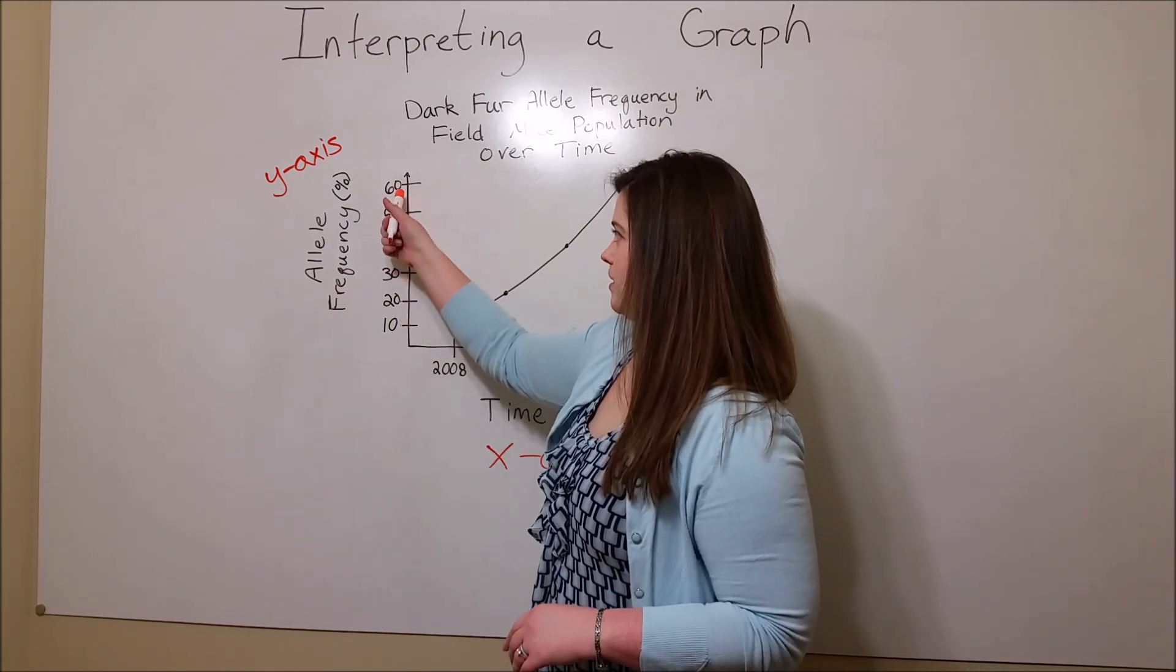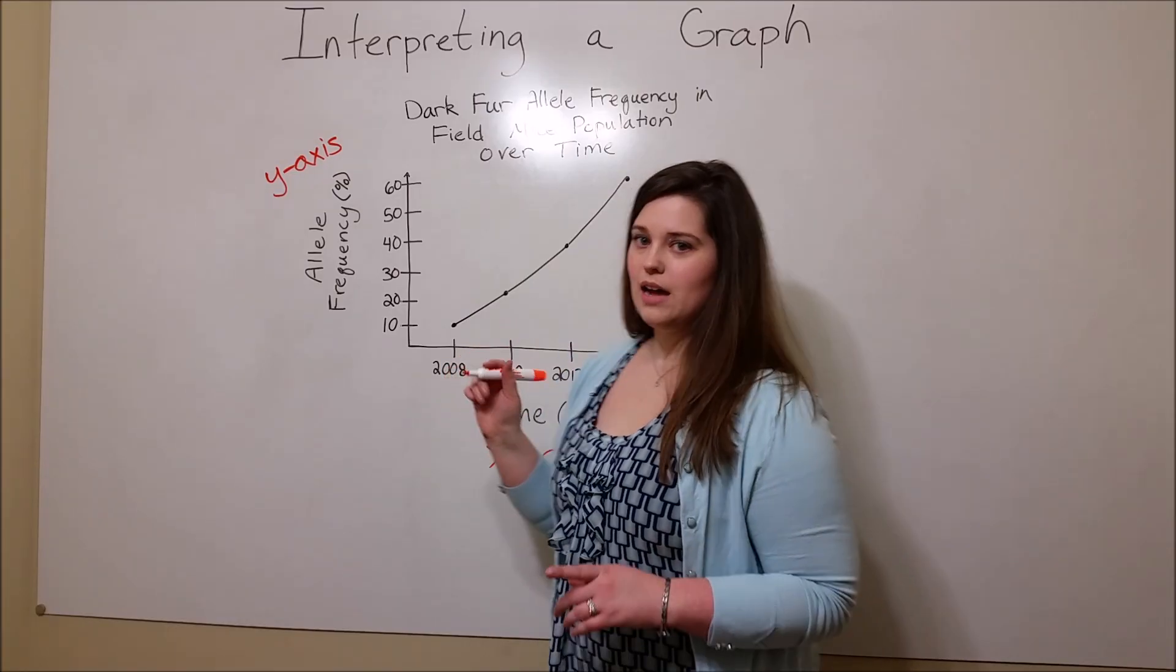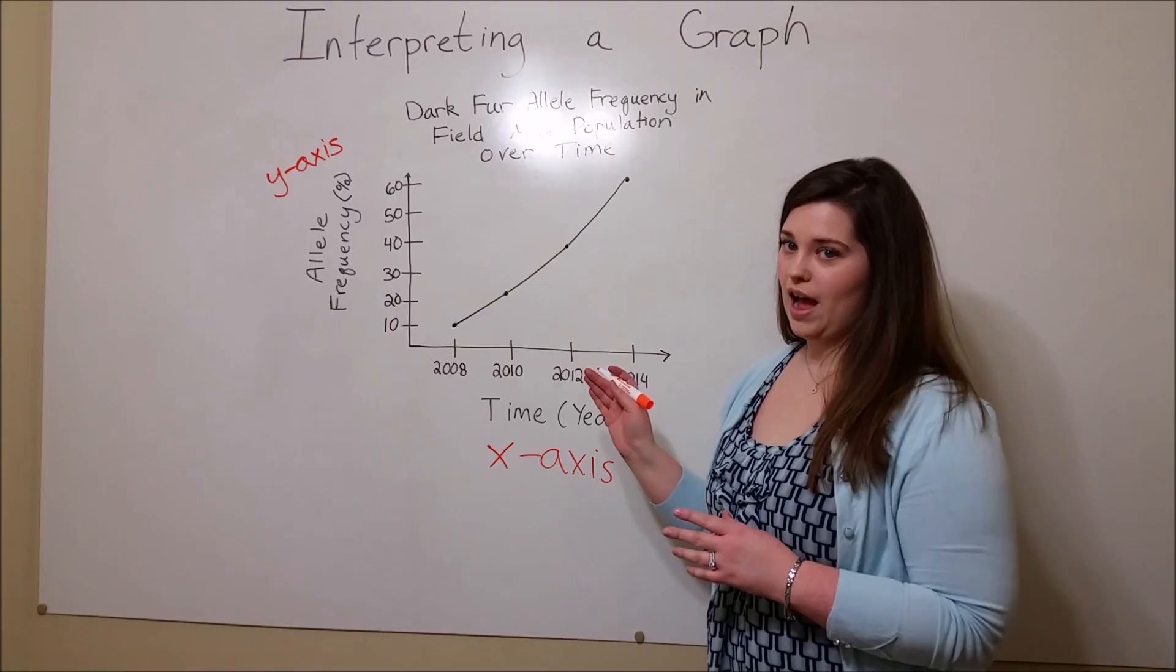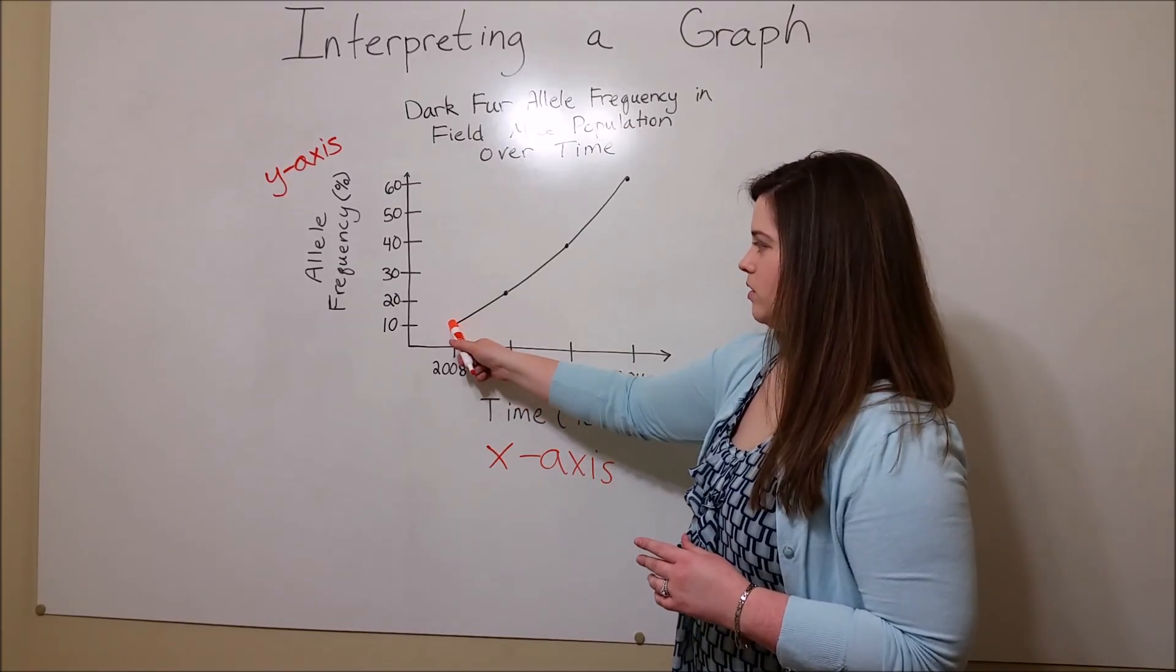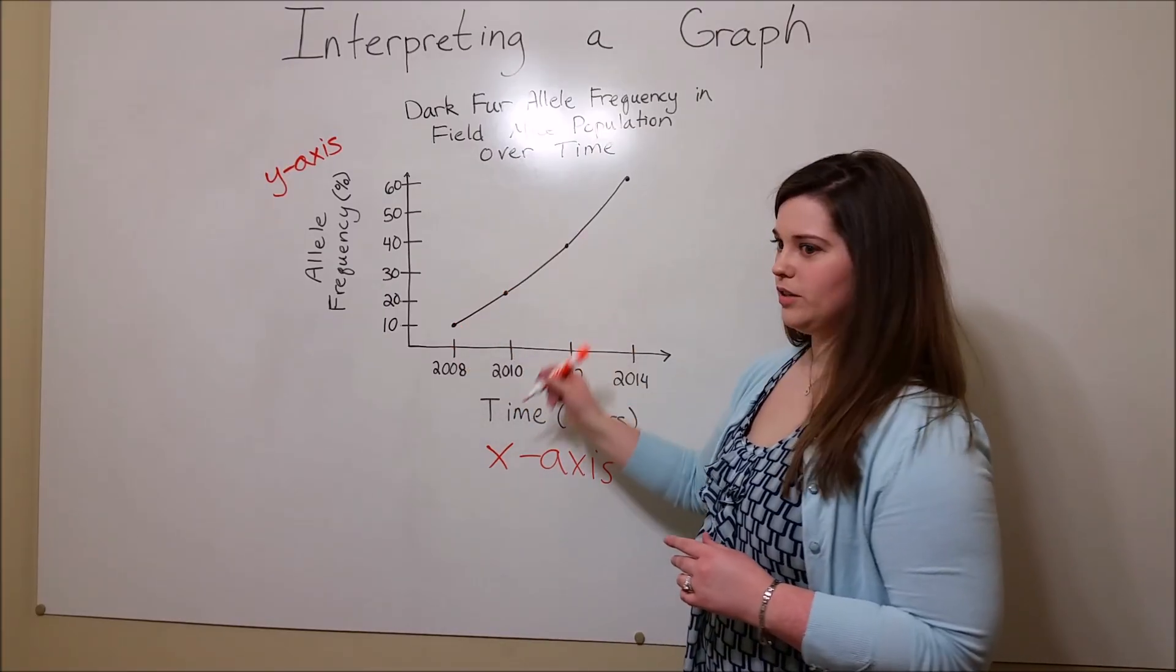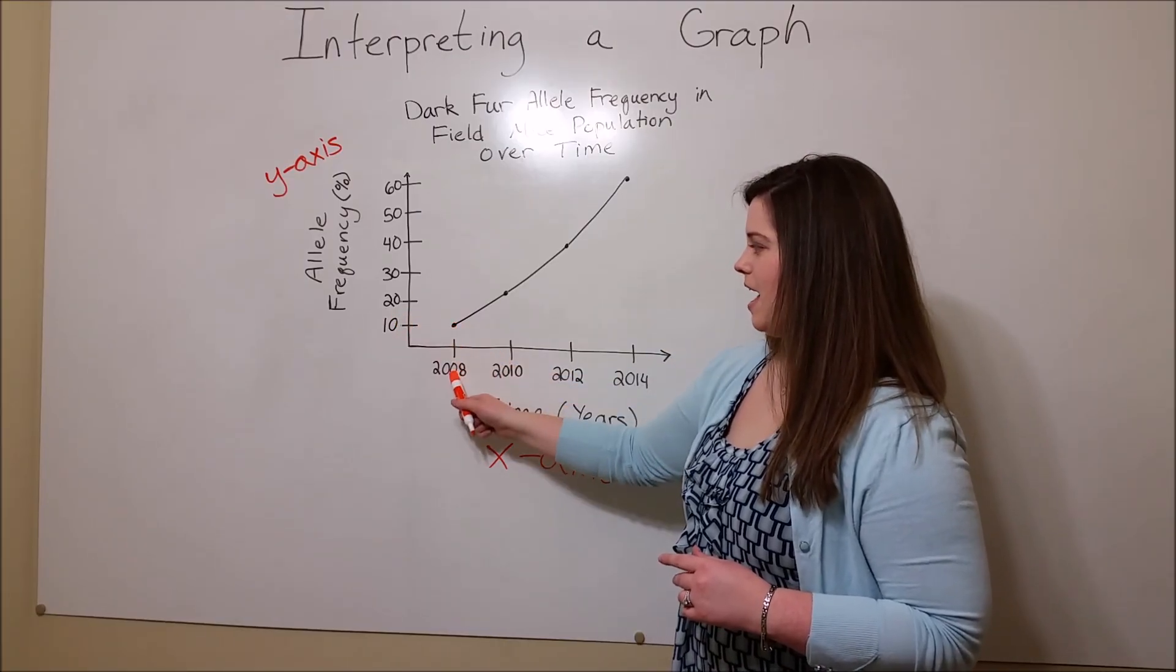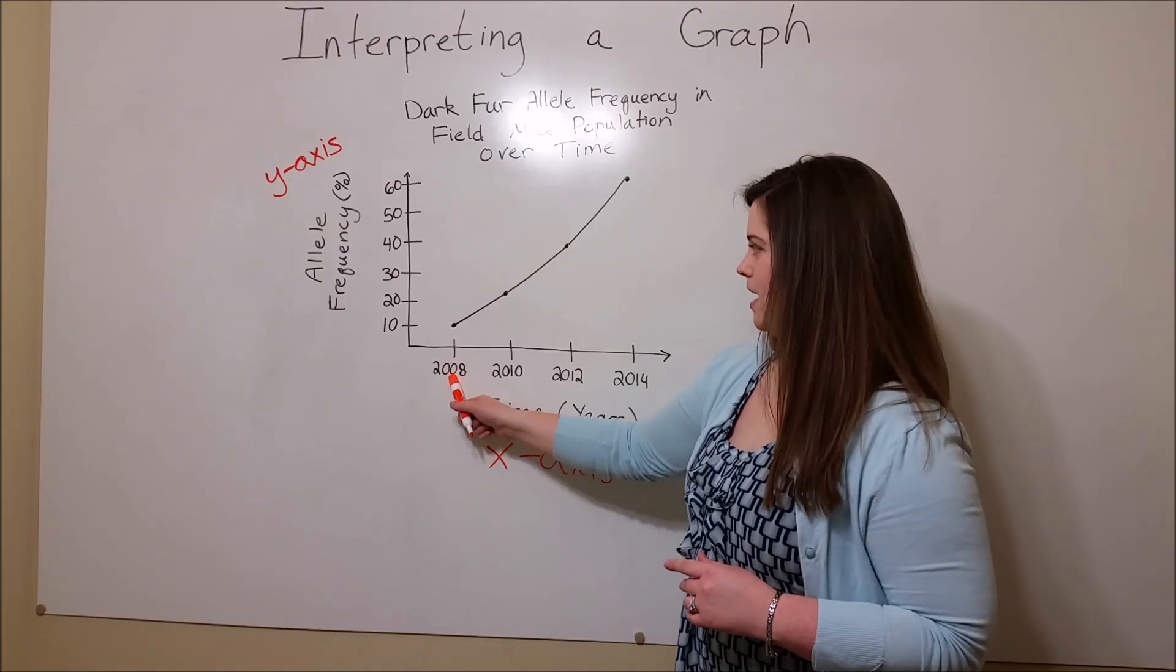Now let's look at how to interpret what we see on the graph. Each point represents a coordinate, where a percentage was measured, for example 10% in a given year, here 2008.